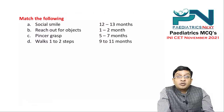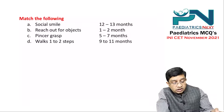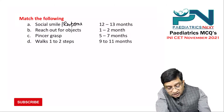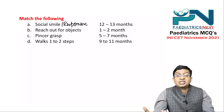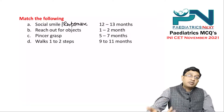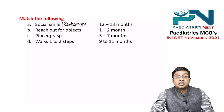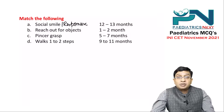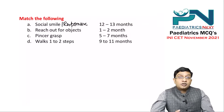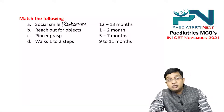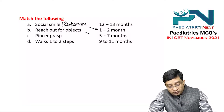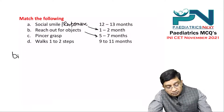Regarding milestones — a match-the-following question. Social smile, also called responsive smile (different from spontaneous smile), is seen at 6 to 8 weeks, so the most appropriate answer is 1 to 2 months. Reaching out for objects should be 5 to 7 months, because bidextrous grasp is at 5 months, unidextrous grasp at 6 months, and transfer of objects from one hand to another at 7 months.